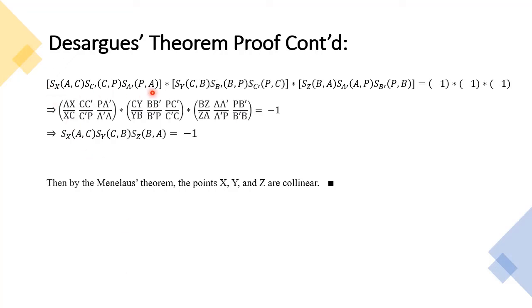We first multiply these three expressions together. On the left-hand side it equals this, and on the right-hand side it equals negative 1. So we are left with the signed ratio of point X on the line AC times the signed ratio of point Y on the line CB times the signed ratio of point Z on the line BA equals negative 1. Then by Menelaus's theorem, the points X, Y, and Z are collinear.